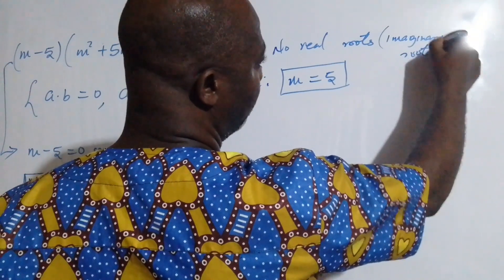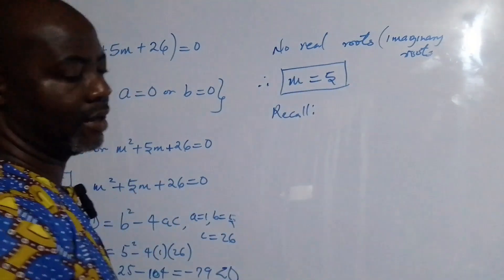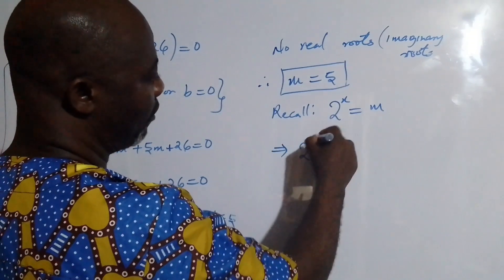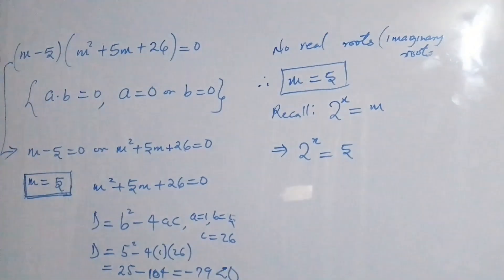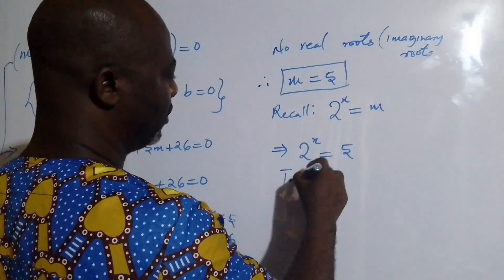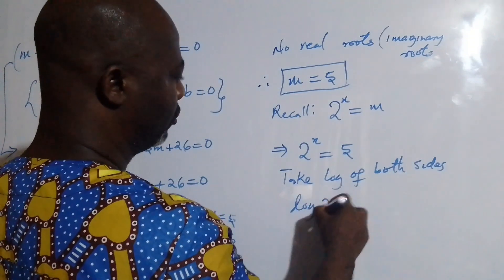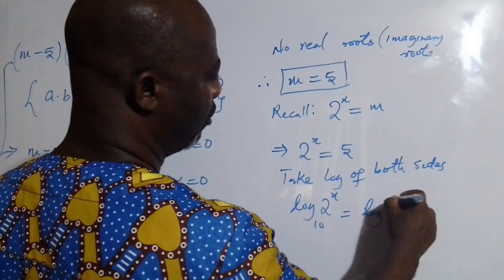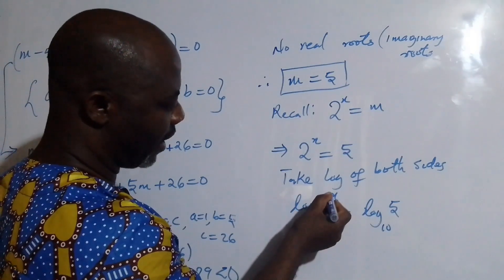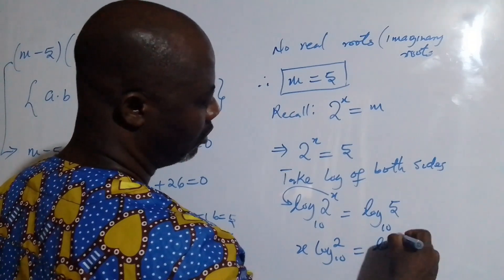Recall that we said 2 to the power of x equals m, and m equals 5. Therefore, 2 to the power of x equals 5. To solve this, we take the log of both sides to base 10. So we have log of 2 to the power of x equal to log 5, base 10. By the logarithm power rule, x becomes the coefficient: x log 2 equals log 5.